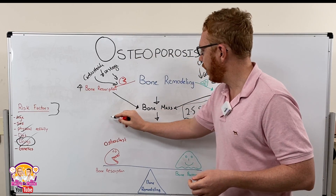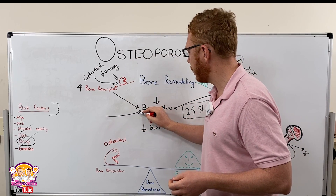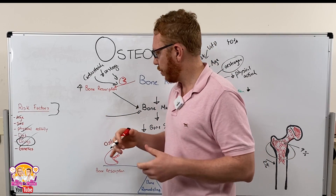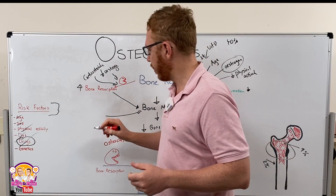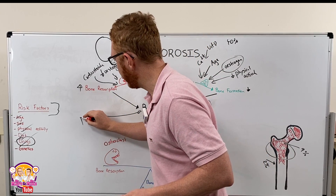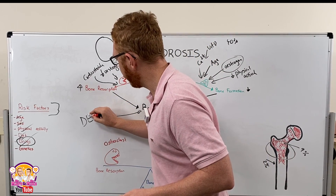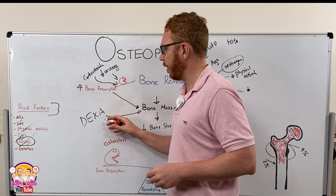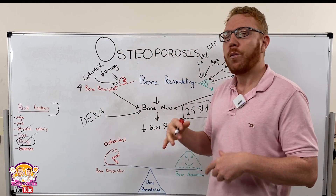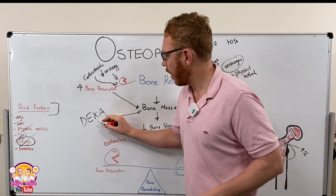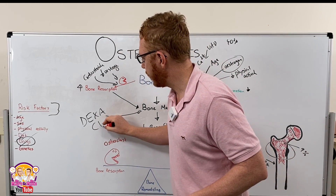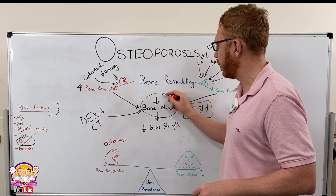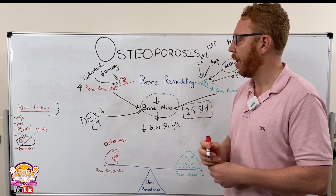To measure bone density, a standard X-ray is insufficient. We use a special imaging technique called a DEXA — dual energy X-ray densitometer — or a quantitative CT. Both techniques measure the density of bone.